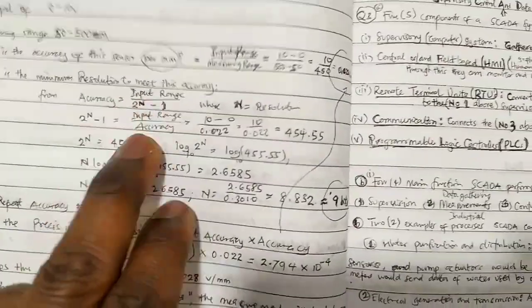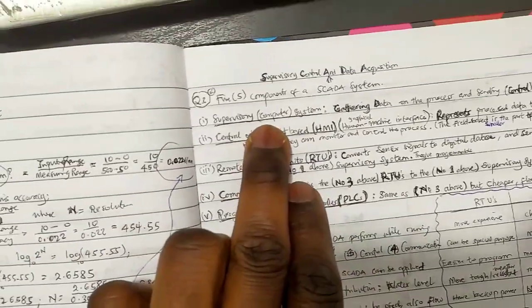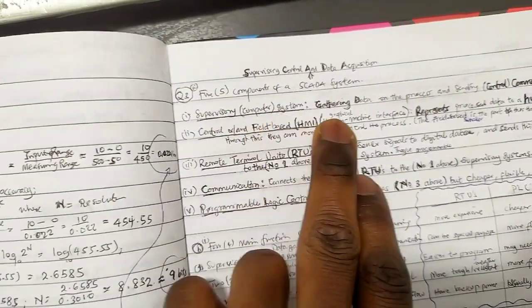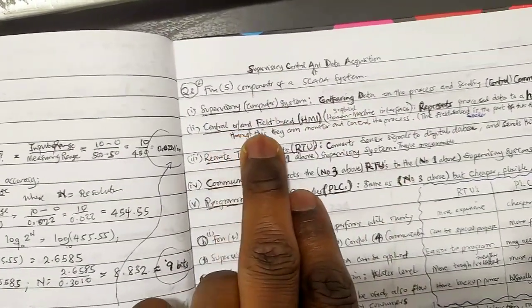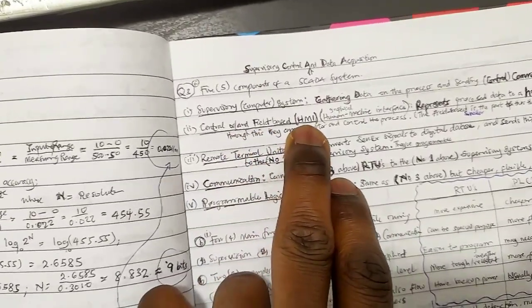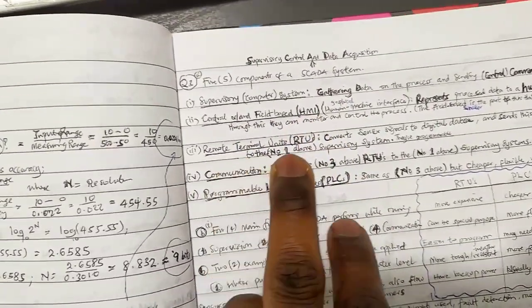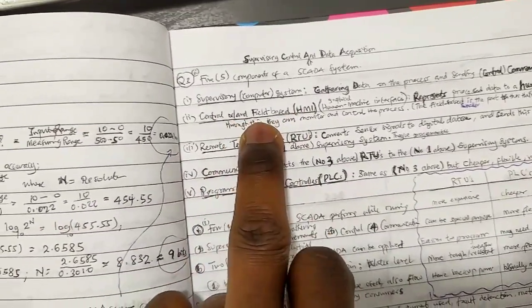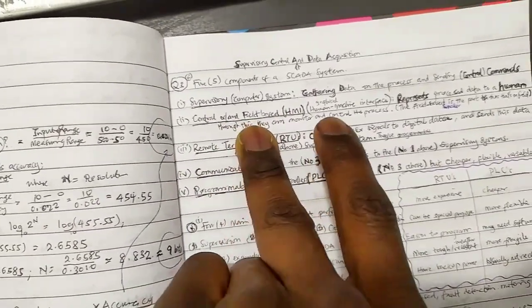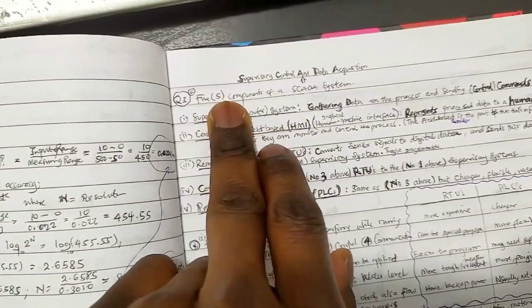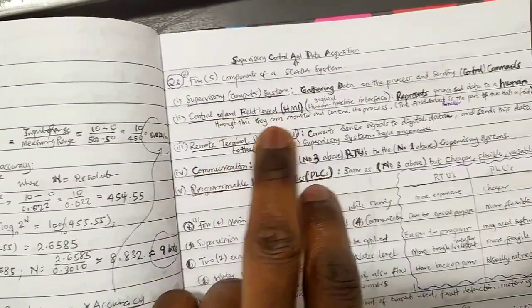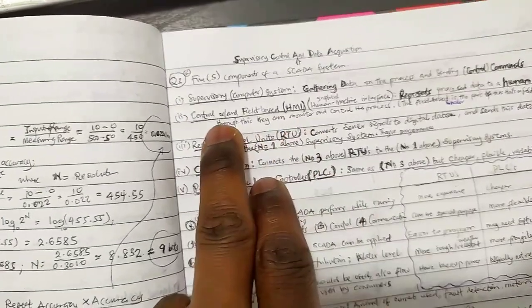The five components of SCADA: supervisory computer system, central or field-based HMI, remote RTU communication. I merged these two together. The question says what are the five components. I notice two of his components are very similar—they're both HMIs, one is central, the other is field-based.